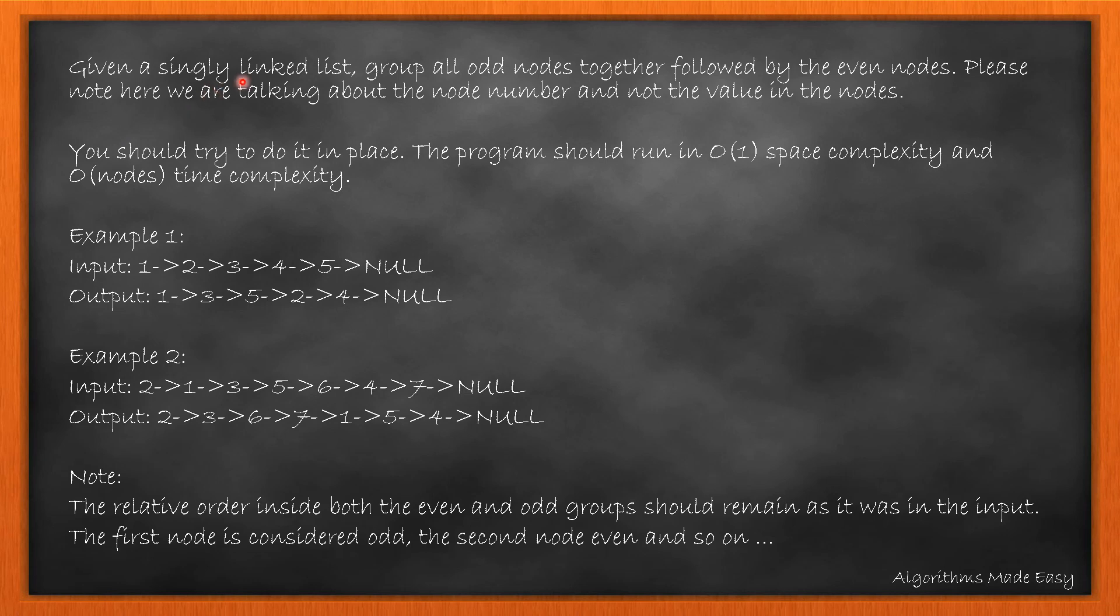We are given a linked list. We need to group all odd nodes together followed by all even nodes. It is mentioned that we need to group them on the basis of node number and not on node value. We need to perform it in place so we cannot use extra space. Let's see how we can solve it.